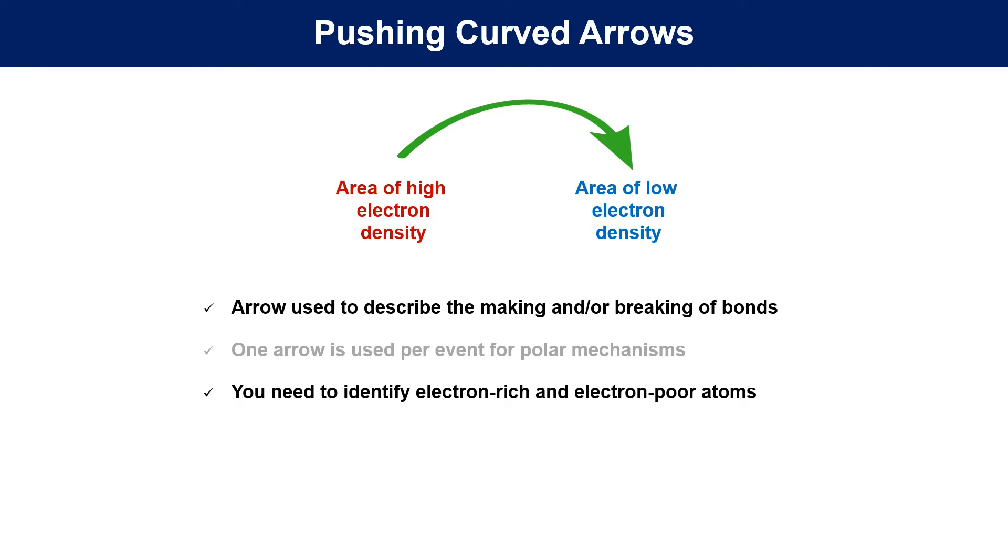We use electronegativities and lone pairs to identify electron-rich areas, and arrows will tend to flow in the same direction as electron density is transferred. The arrows show up in over 100 mechanisms, so getting comfortable with their use early is important.